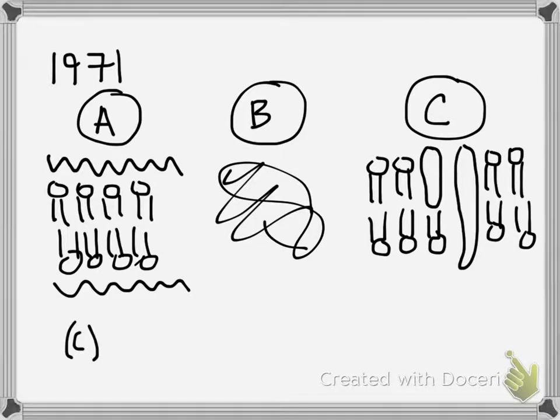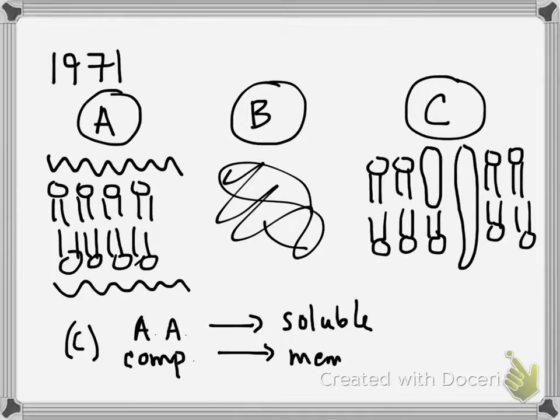So in part C, the piece of data they want you to consider is that Singer wrote in this article that the average amino acid composition of soluble proteins, so these are proteins that are chilling free, and they're not in a membrane. These have the same amino acid composition as membrane proteins. He did not find a difference between the amino acids that make up free-floating proteins and the proteins that are embedded in a membrane.